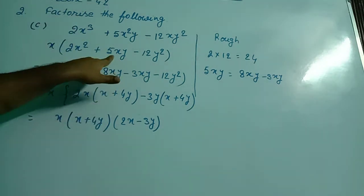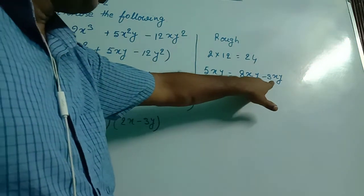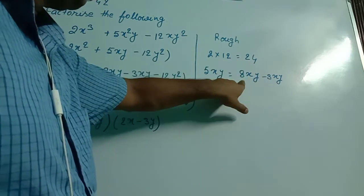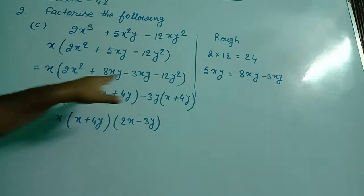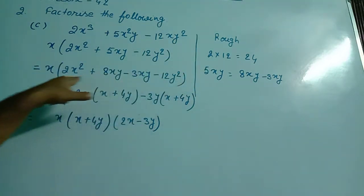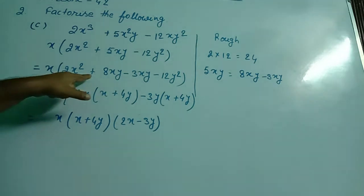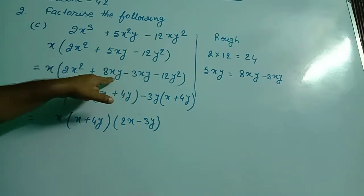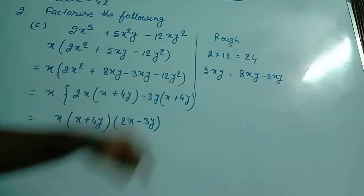So, I splitted it as 8xy minus 3xy. 8 threes are 24, and 8xy minus 3xy equals 5xy. I wrote this splitted term here: X into 2x² plus 8xy minus 3xy minus 12y², where X is common already.